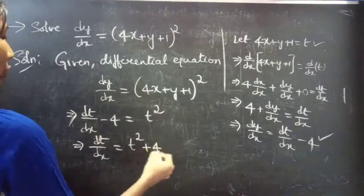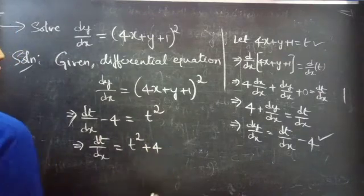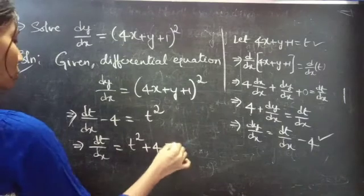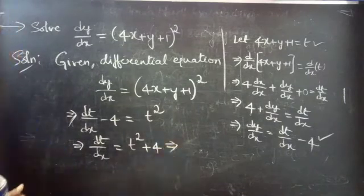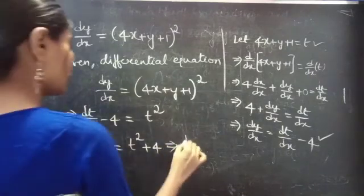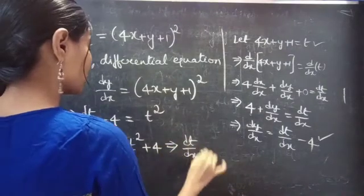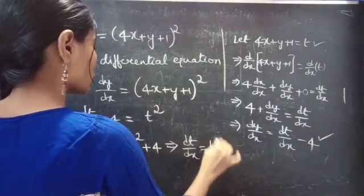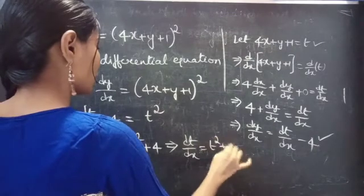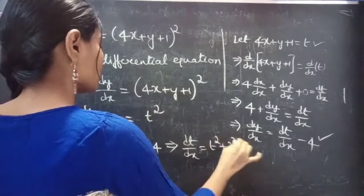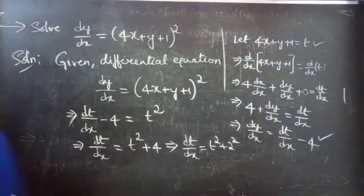Again, we can write this 4 as 2 squared. Then, dt by dx equals to t squared plus 2 squared.